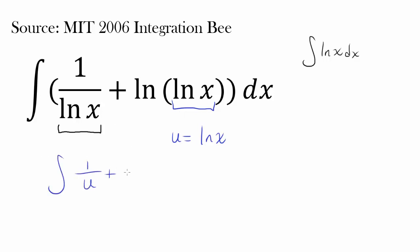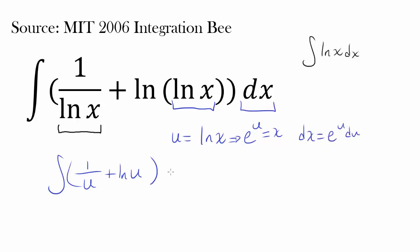So you have 1 over u plus natural log of u. And you know e to the u is equal to x — I'm writing it using exponential form. So dx is going to be e to the u du. So we have dx being e to the u du. How do we integrate this? You don't — that's way too hard. I don't think I can wrap my brain around this.